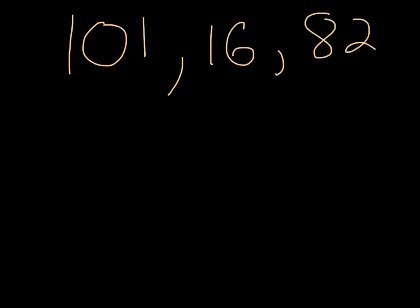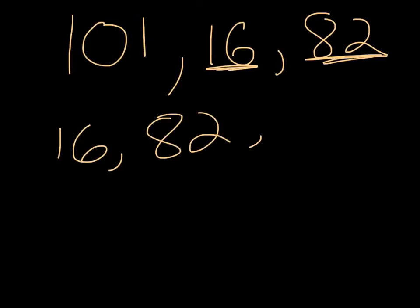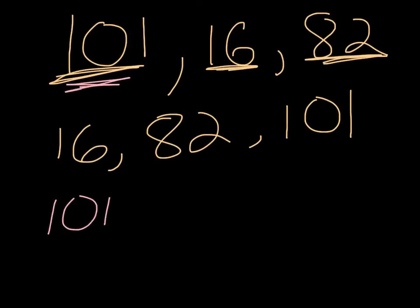Okay, the second problem was 101, 16, and 82. From least to greatest, the first number would be 16 because it is the lowest. The second would be 82 because it's the second lowest. And the third would be 101 because it's the highest and third lowest. From greatest to least, 101 would be first because it is the highest. Then 82 would be second because it is the second highest. And the last number would be 16 because it's the third highest and lowest number.